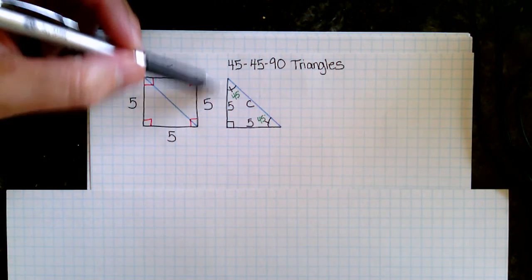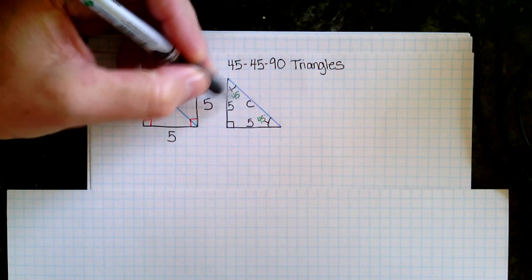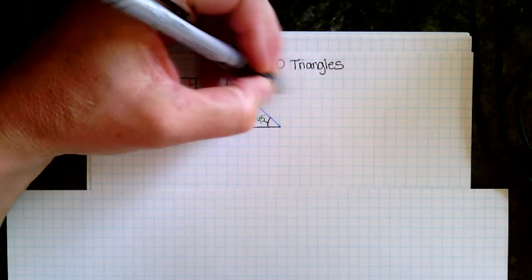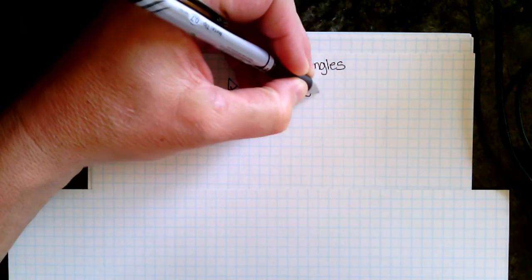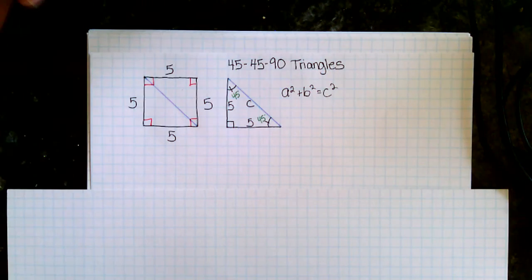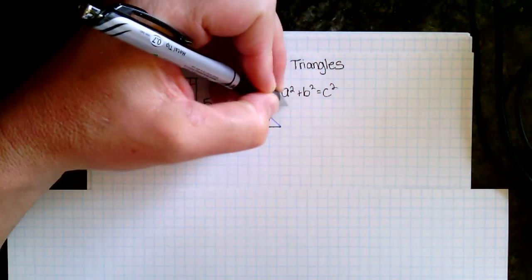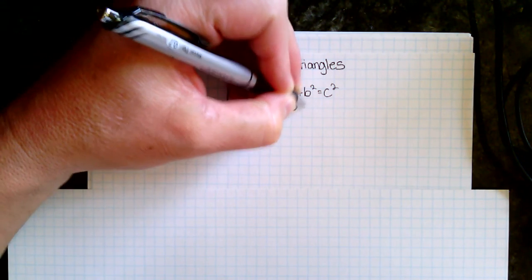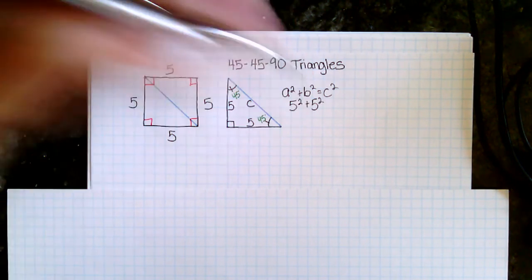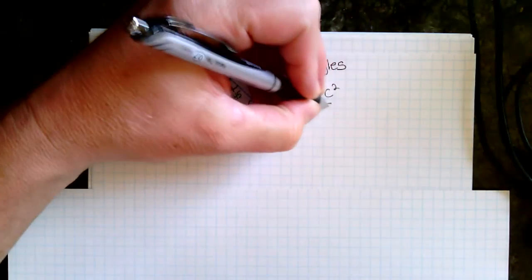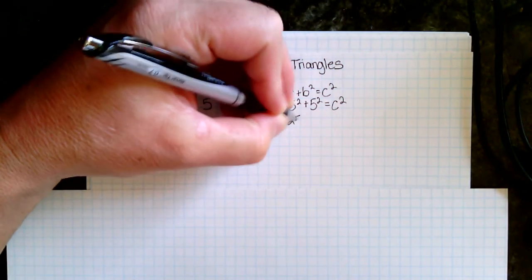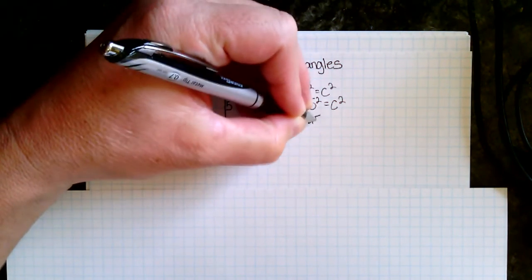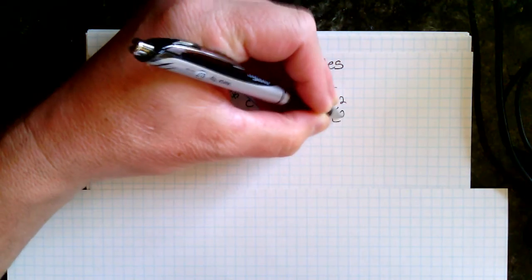So, staying with that thought, if I want to find this third side C, I can again go back and use Pythagorean theorem. Both of these are 5, so I would have 5 squared plus 5 squared equals C squared. So that's 25 plus 25 equals C squared.